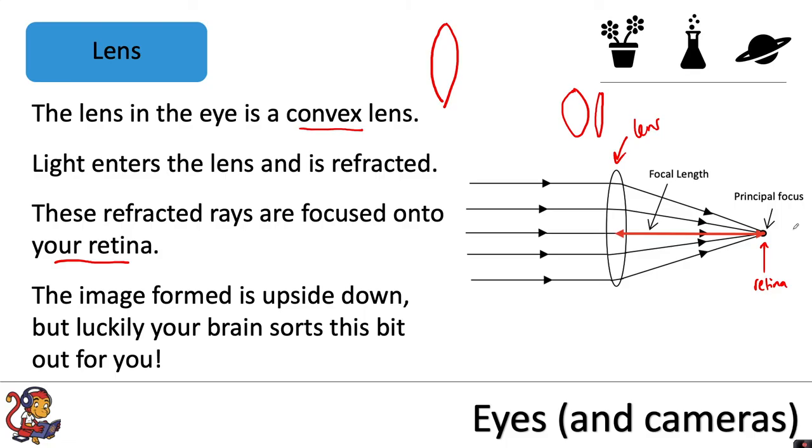The image formed is upside down but luckily your brain sorts this bit out for you. When the information is sent along the optic nerve to your brain it will flip that image upside down.